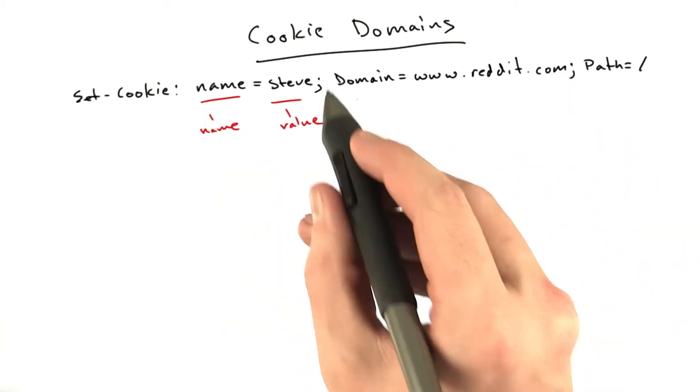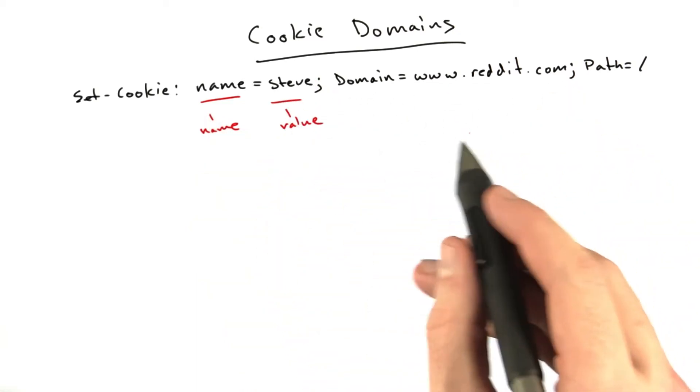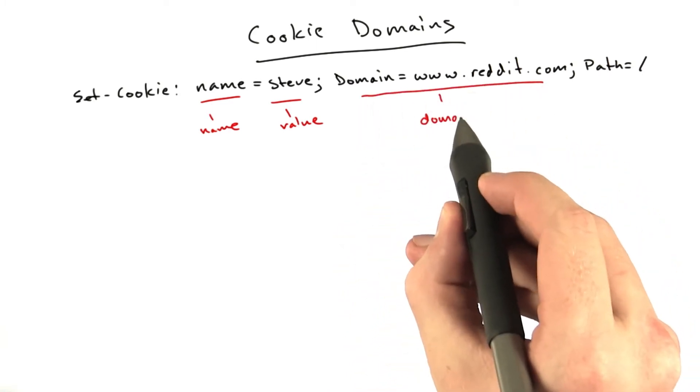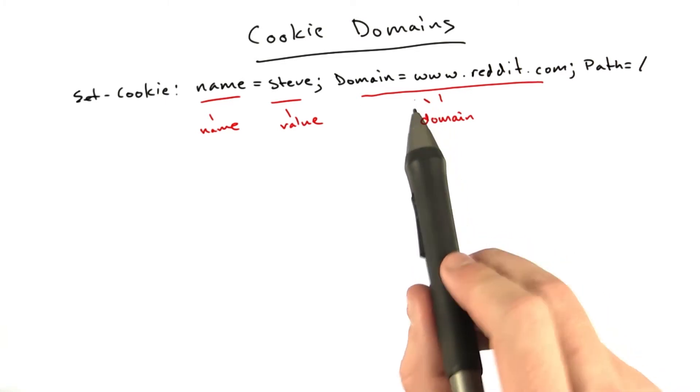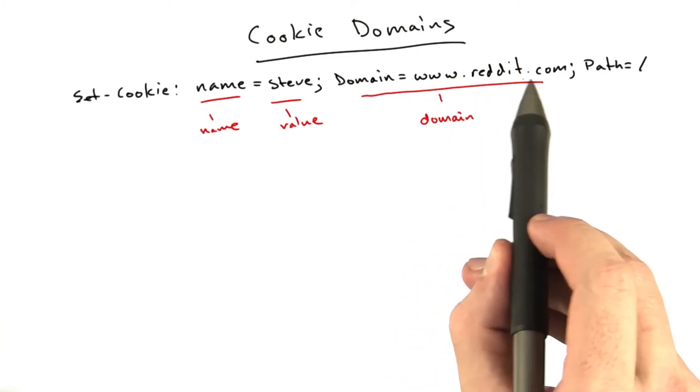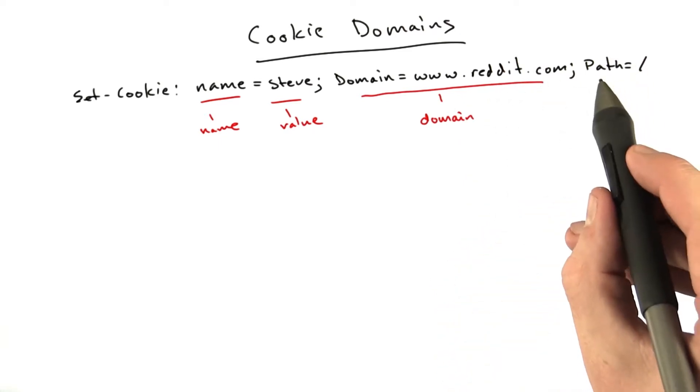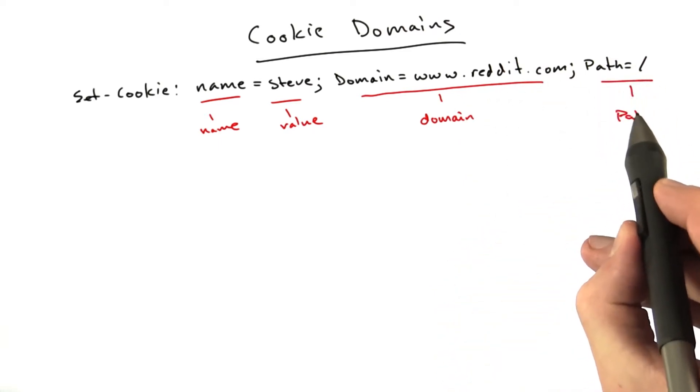Now we've added a couple extra parameters. We've got a semicolon to end the value. We've added this domain parameter, and this is what domain this cookie is relevant to. In this case, it is relevant to www.reddit.com, and this is the path that it's relevant to.